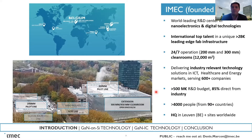At iMac we have two fabs: one is a 300 millimeter fab dedicated to CMOS scaling, and the other is a 200 millimeter pilot line — a 0.13 CMOS line — which is used for all the more-than-Moore technologies.